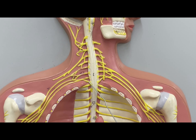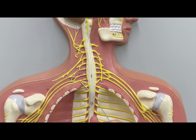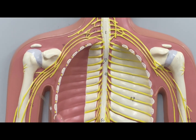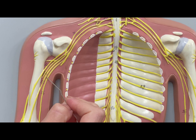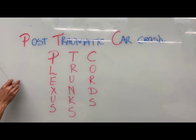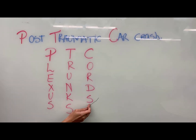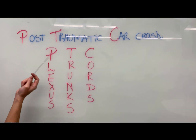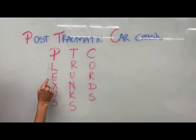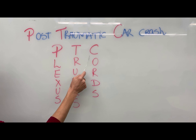You need to remember that the brachial plexus is subdivided into trunks, and then afterwards you have the subdivision into cords, and then into nerves. A little mnemonic: you can remember plexus, trunks, and cords by thinking of 'post-traumatic car crash' — PTC. First you have the plexus, afterwards the trunks, and then the cords.